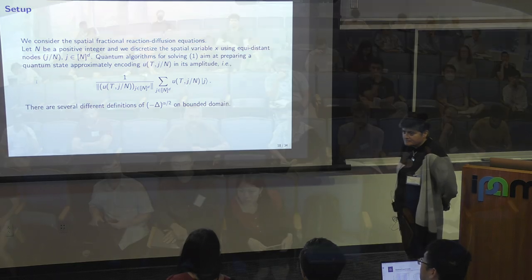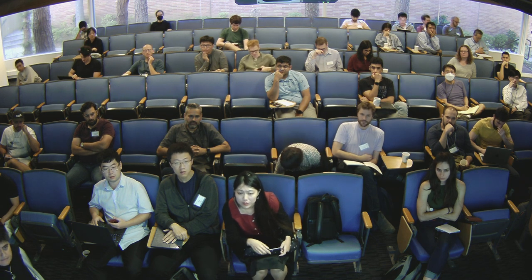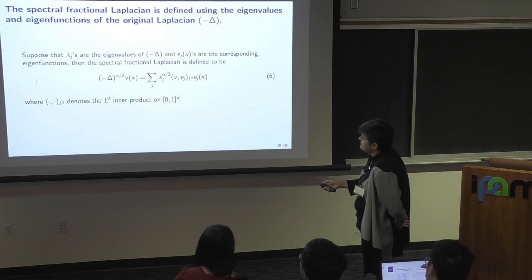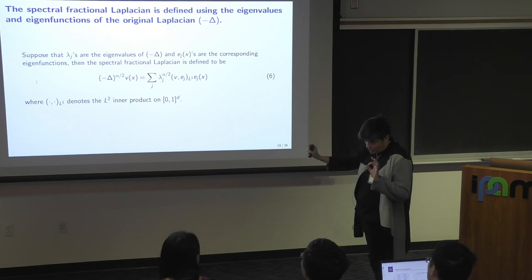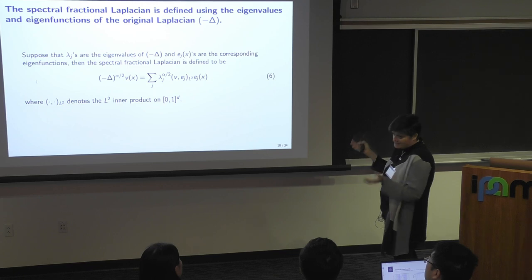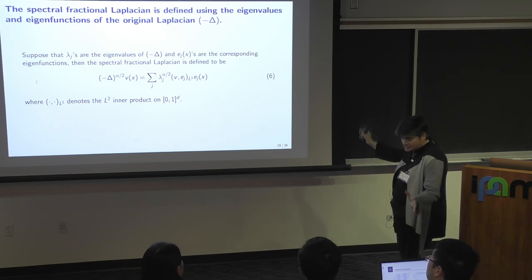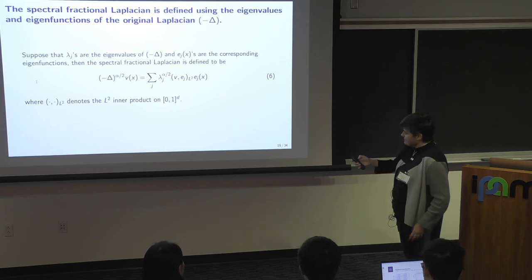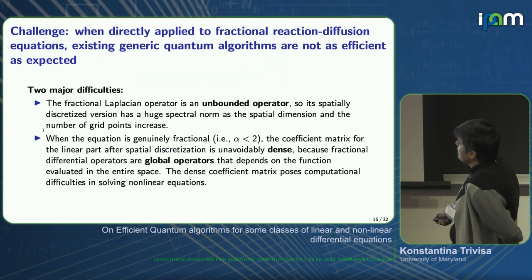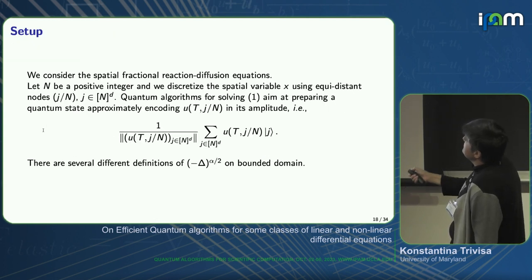A question arose: does the definition of the fractional Laplacian agree with the Fourier definition? Yes — the spectral fractional Laplacian definition is equivalent to the Fourier definition on the torus. In the case of a bounded domain, one has to choose a specific definition, and we made the definition through the Riesz operator. Currently we are still discussing the bounded domain case with Dong An.